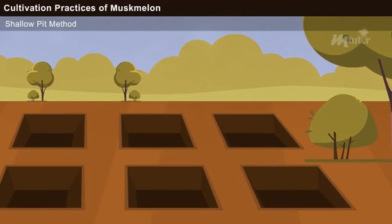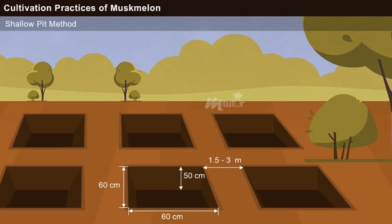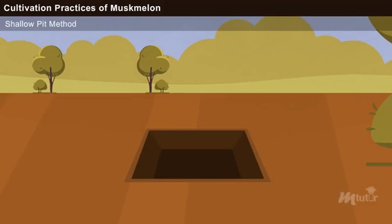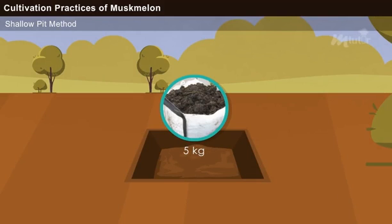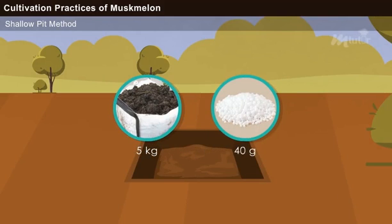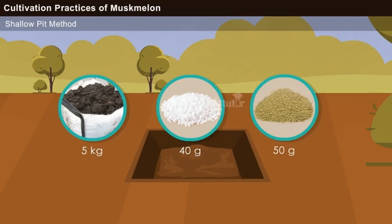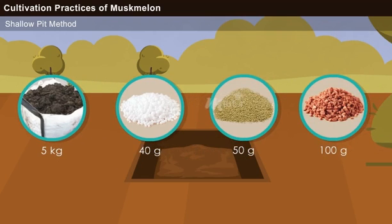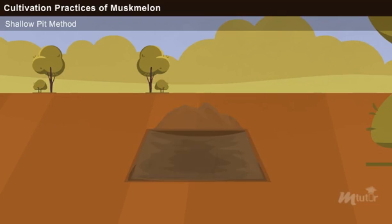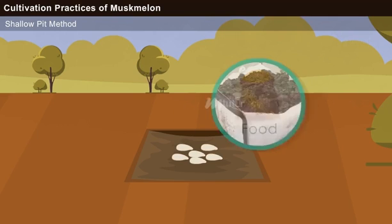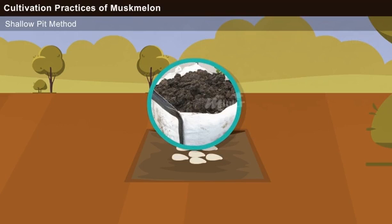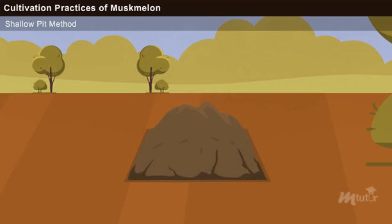Shallow pit method. Here, shallow pits of 60 x 60 x 50 cm are dug with a spacing of 1.5 to 3 meters. Each pit is filled with a mixture of soil, 5 kg of farmyard manure, 40 g of urea, 50 g of phosphate and 100 g of potash. Once the pits are filled, a circular basin is made inside the pits and the seeds are sown at a rate of 6 seeds per basin. Later, the seeds are covered with a small amount of farmyard manure or well-rotten compost.